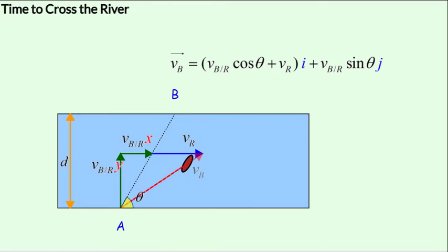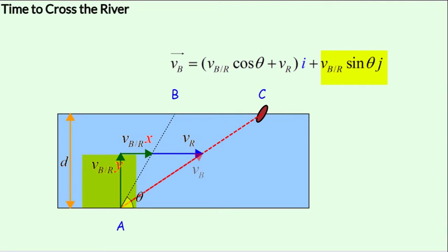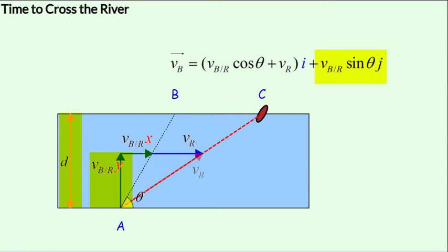The velocity of the boat with respect to the ground can be expressed as vb_r·cosθ i + vr i + vb_r·sinθ j. Let's look at these two components of vb parallel and perpendicular to the banks of the river. To cross the river — that is the distance d along the y-axis — we look at only the y-component of velocity of the boat with respect to the ground, which is vb_r·sinθ.